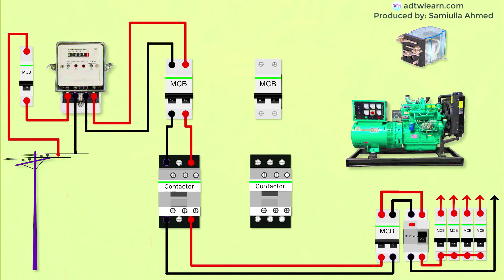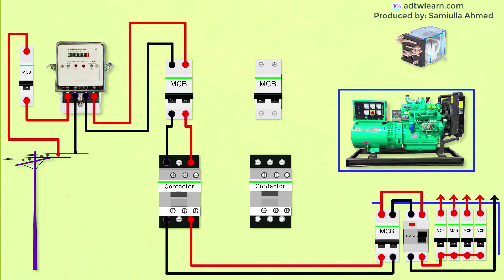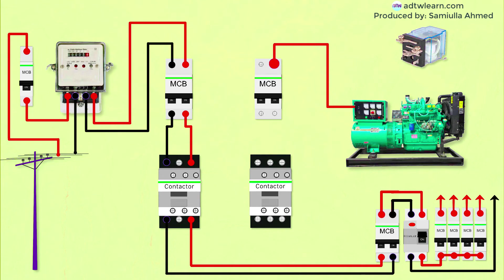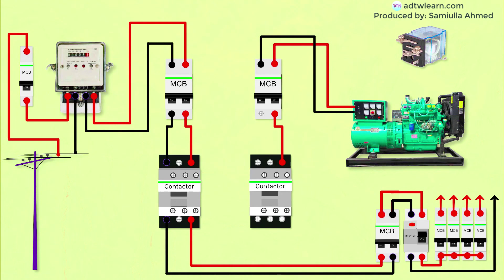Next, we need to connect the supply of the electricity generator to the house distribution board. The supply of the generator is connected to the distribution board passing through the second MCB and second contactor. This is the basic wiring.